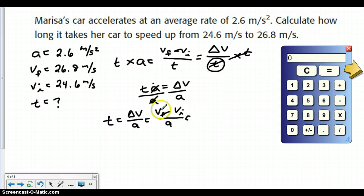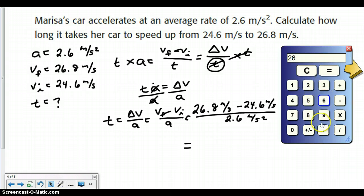We can just plug in all of our numbers. VF happens to be 26.8 meters per second minus VI, which is 24.6 meters per second. And we take all of that and divide it by the acceleration, which is 2.6 meters per second squared. If we grab our calculator, we can go 26.8 minus 24.6, which gives us 2.2. 2.2 divided by 2.6 equals 0.8.